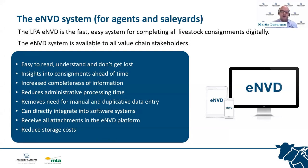The electronic national vendor declaration system is the digital process used by LPA accredited producers and feedlots to complete their livestock movement, livestock assurance, and health declarations. The LPA ENVDs are a legal document which communicate the food safety and treatment status of every animal as they move through the supply chain. As a reminder, receivers of livestock still need to complete the transfer in the NLIS.